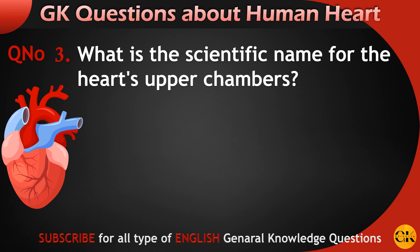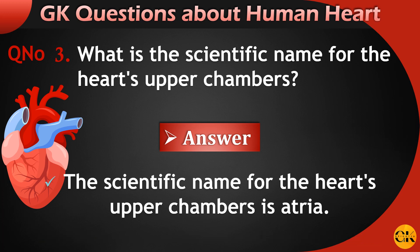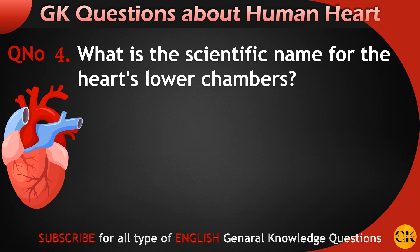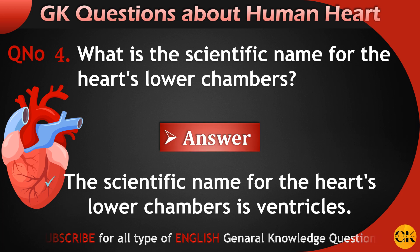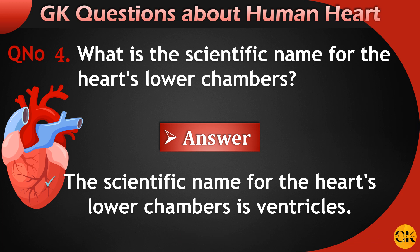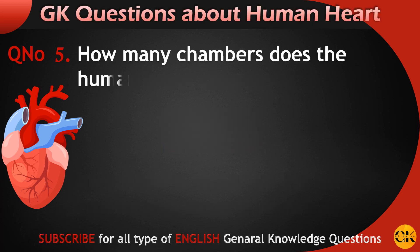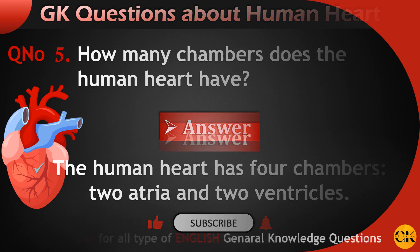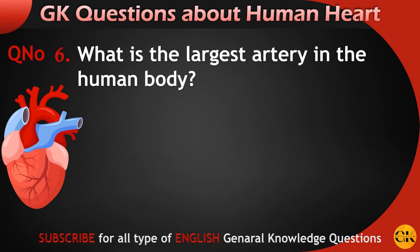What is the scientific name for the heart's upper chambers? The scientific name for the heart's upper chambers is Atria. What is the scientific name for the heart's lower chambers? The scientific name for the heart's lower chambers is ventricles. How many chambers does a human heart have? The human heart has four chambers: two Atria and two ventricles.